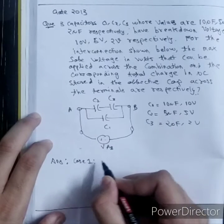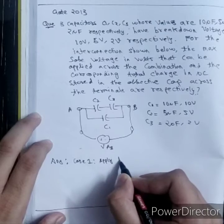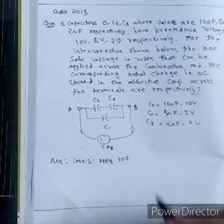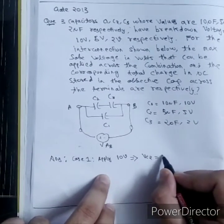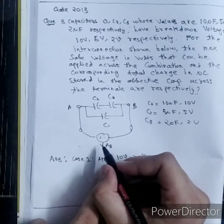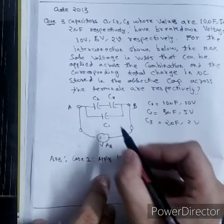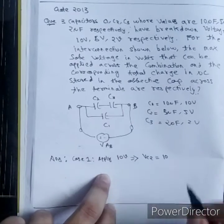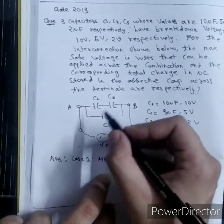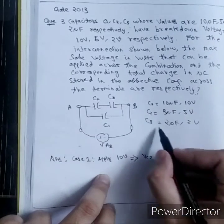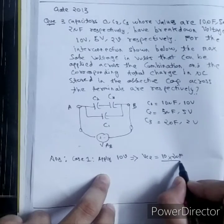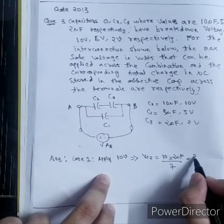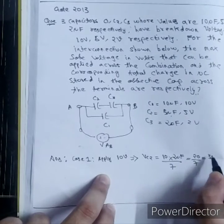Case 1: Apply 10V. If I apply 10V, I need to find voltage across C2. This 10V is dividing between C2 and C3. Using voltage division rule, I can find voltage across VC2 and voltage across C3. VC2 will be 10V into opposite capacitance C3 value 2 microfarad divided by total, 5 plus 2 equals 7. It is 20 by 7 which is approximately equal to 3V.